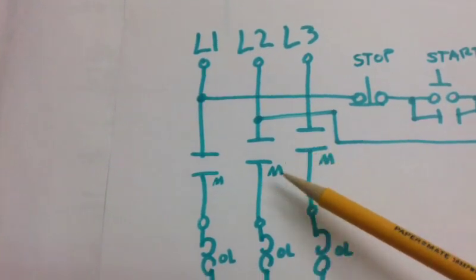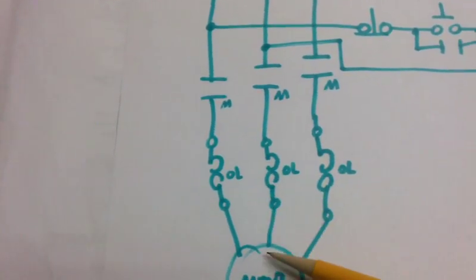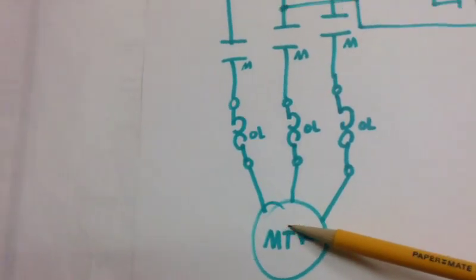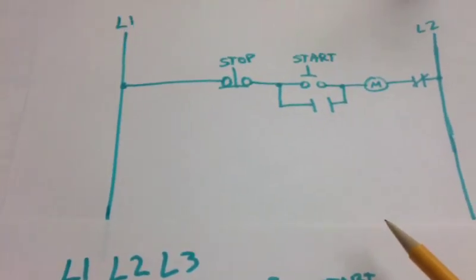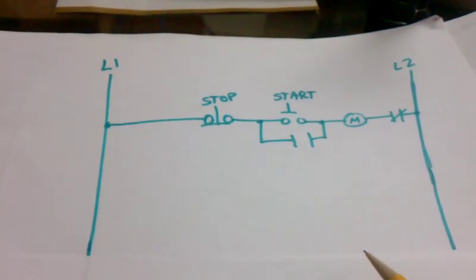And then from the overload relay it goes to the motor. As you can see, this is a circuit that you as an electrician must know how to draw on a ladder diagram and also on a wiring diagram.